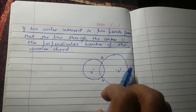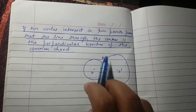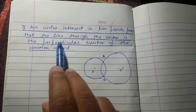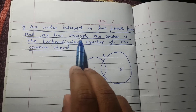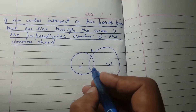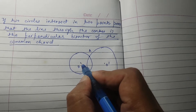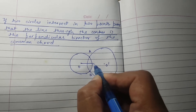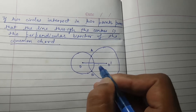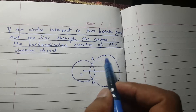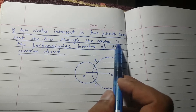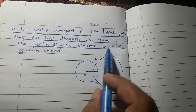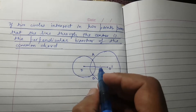In this figure we have two circles intersecting at points A and B. We will draw a line through the centers connecting them. The line through the centers is what we need to show is the perpendicular bisector of the common chord.